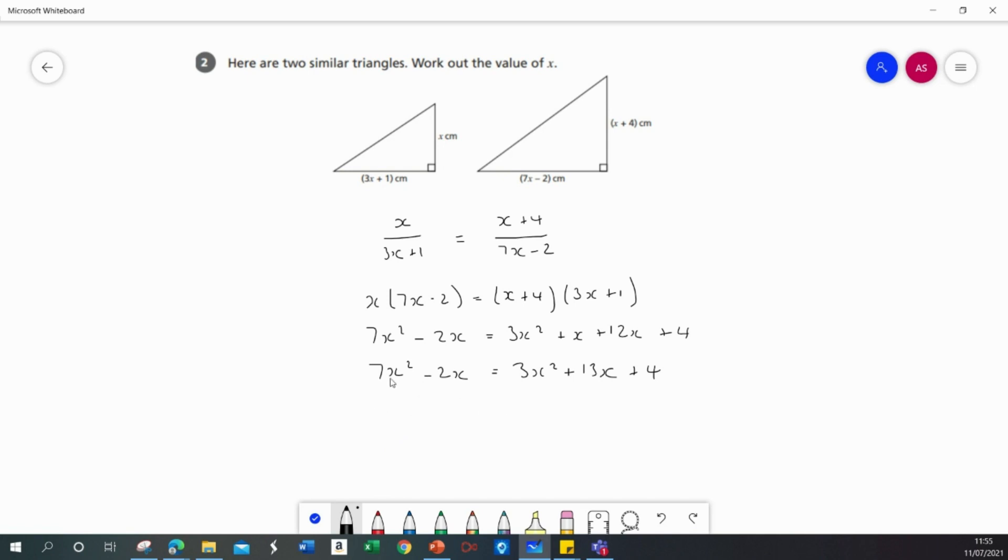So first of all I'm going to subtract 3x squared from both sides, 4x squared minus 2x equals 13x plus 4.